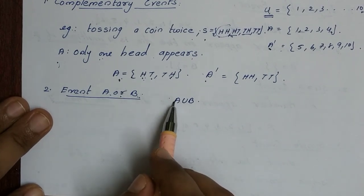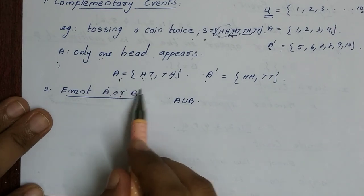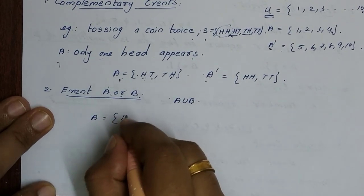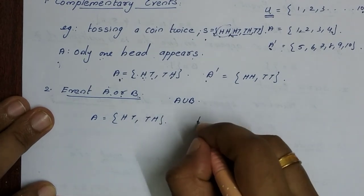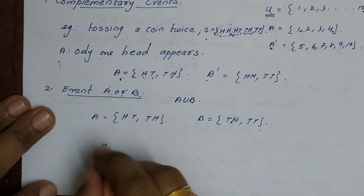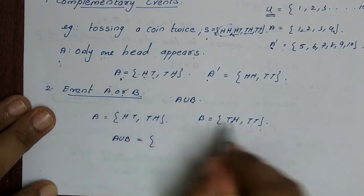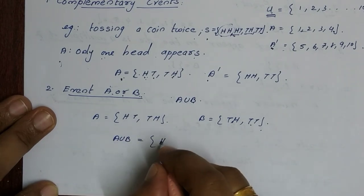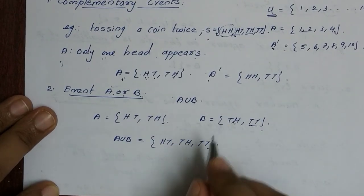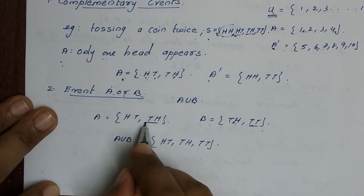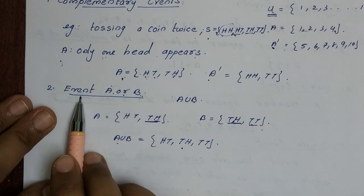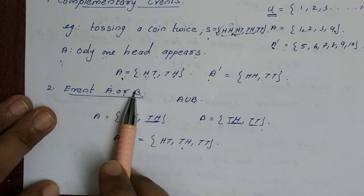Now for the union of events. If we have two events A and B, the union A union B contains all elements from both A and B. For example, A union B gives {HT, TH, TT} — combining the elements of both events. A is an event and B is an event.